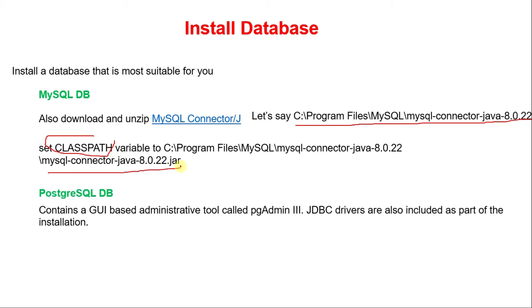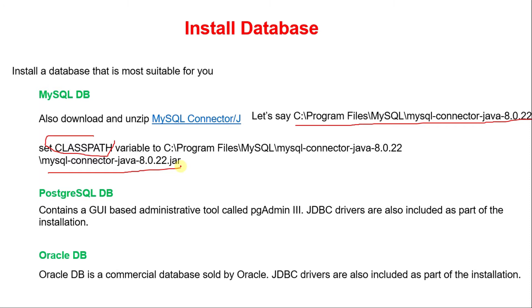PostgreSQL DB is another free and open source database. It also comes with the graphical administrative tool called PGAdmin3. You need not install JDBC Drivers because it also comes with the JDBC Drivers. Oracle is also one of the databases — it is not free and open source, it is a commercial database. Oracle DB also comes with pre-installed JDBC Drivers, so you need not install them again.